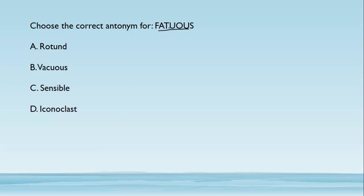Choose the correct antonym for 'fatuous.' Fatuous means someone who is very insensible, silly, or not very intelligent. The correct antonym is someone who is intelligent, well-behaved, and sensible — the answer is 'sensible.' 'Rotund' means having a round or heavy body. 'Vacuous' is a synonym for fatuous — also for someone insensible or very silly. 'Iconoclast' is someone who does not follow old rituals or orthodoxy, preferring new trends. The correct answer is 'sensible.'